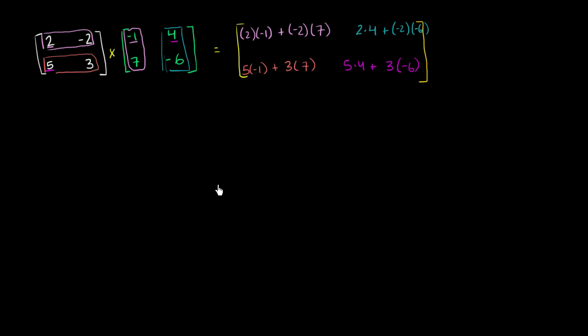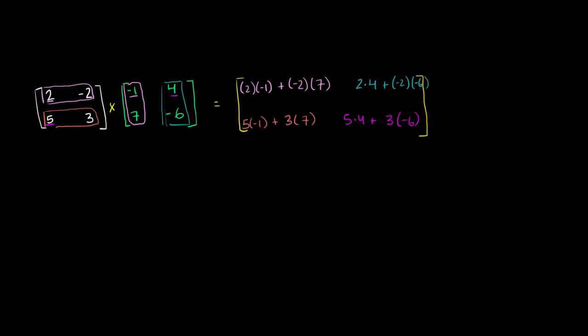Now what does all of this simplify to? So this is going to be equal to, let's see. So negative 2 plus negative 14, that's going to be negative 16. That right over there is negative 16. Then we have 8 plus 12, so that's going to be 20. And then we have negative 5 plus 21, which is going to be 16, positive 16. Did I do that right? Yep, positive 16. And then finally, you're going to have 20 minus 18. So that's just going to be 2.